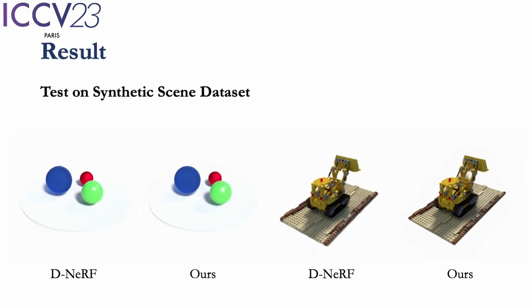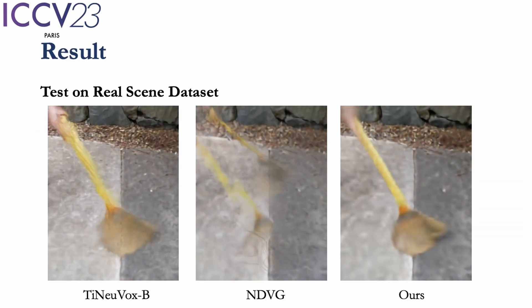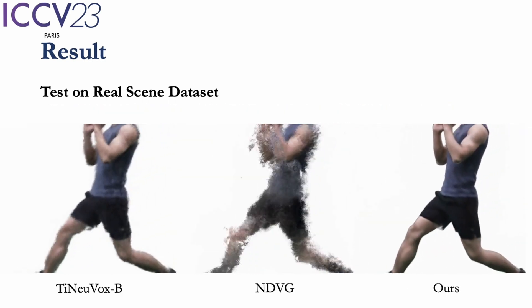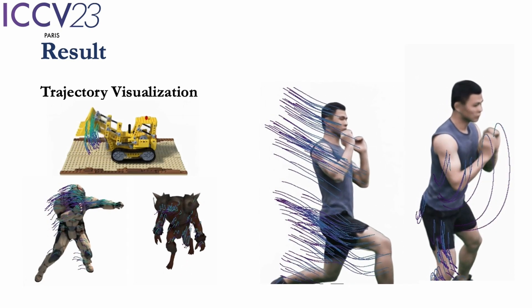These are results on synthetic datasets. These are results on real datasets. Finally, we visualize the learned trajectories of our method.